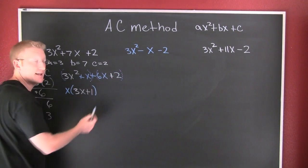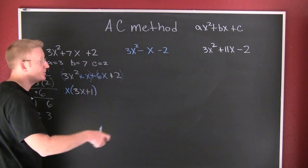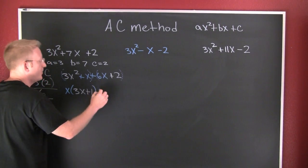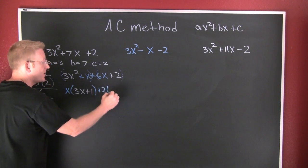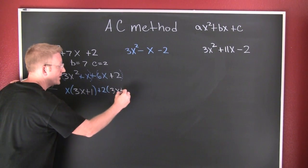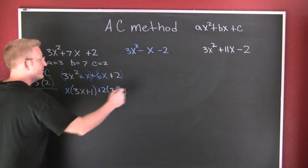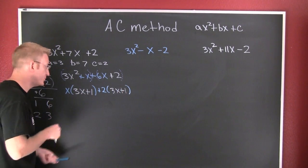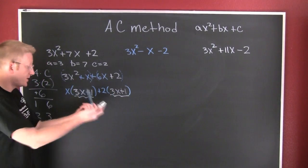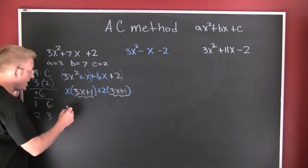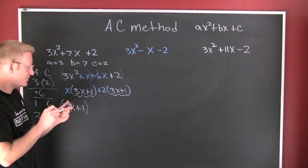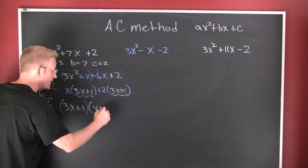What do I pull out of that second group? It appears to be a 2, so I pull a positive 2 out of that second group. Left on the inside, I have 3x plus 1. Do I have a common factor? It appears I do — 3x plus 1 is in both of those terms, so I can factor that out front. And when I do, I get 3x plus 1 times x plus 2.